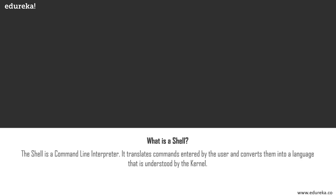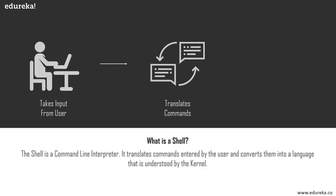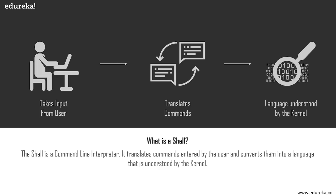Users communicate with the kernel through a program called the shell. The shell is the utility that processes your requests when you type a command at your terminal — it interprets the command and calls the program that you want. The shell uses standard syntax for all commands; it is basically a command line interpreter which translates commands entered by the user into a language understood by the kernel.